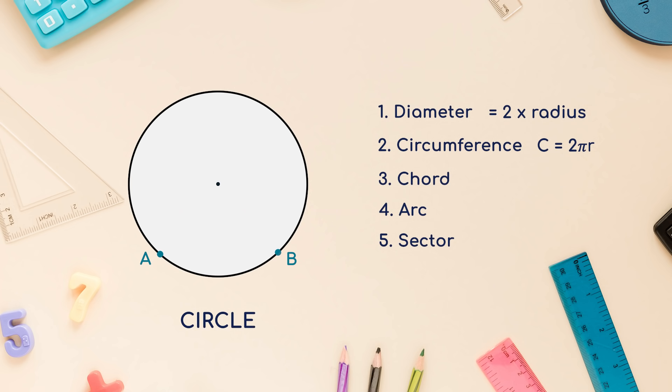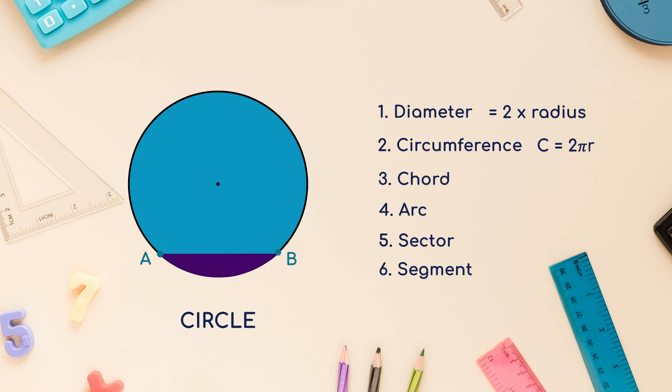5. Sector, a portion of circle which subtends a certain angle at the center is called a sector. This is called a major sector and this is called a minor sector. 6. Segment, the region between a chord and either of its arcs is called a segment of the circular region or simply a segment of the circle. This one is the major segment and this one is the minor segment.